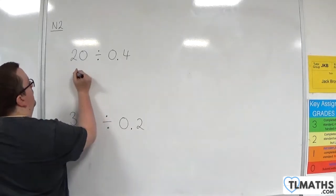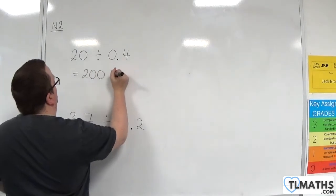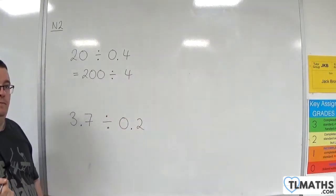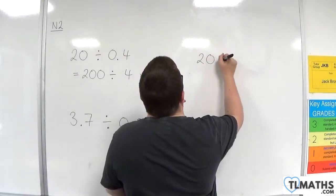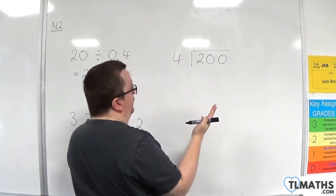So I change the problem by multiplying both of them by 10. And so now, I have 200 divided by 4. We should know the answer is 50 here.